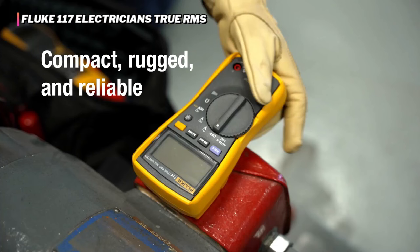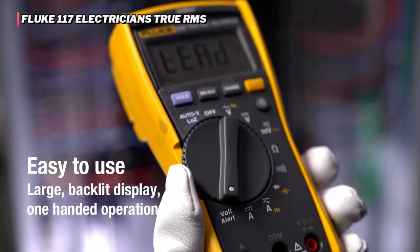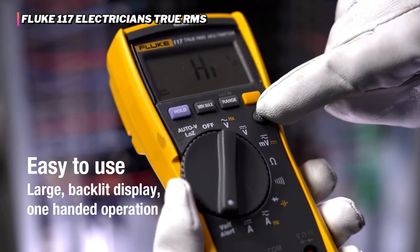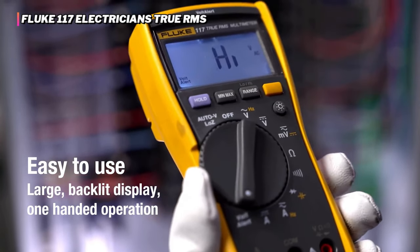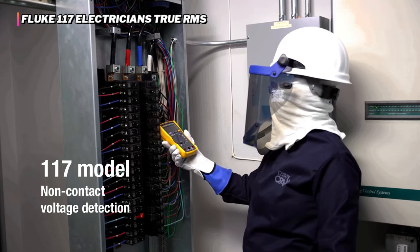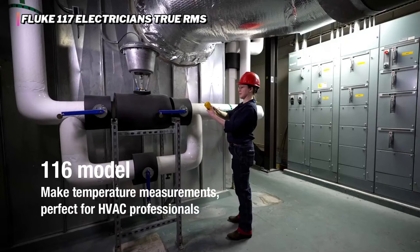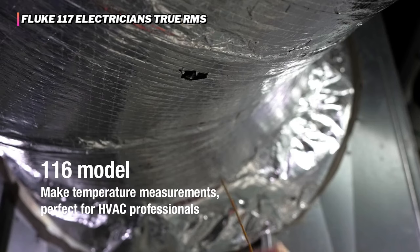This True RMS meter also has a low impedance input that can automatically detect the type of voltage being measured and choose the appropriate range. Additionally, you can purchase a current probe separately if you need to measure anything above 10 amps. The Fluke 117 offers a wide range of technical measurement functions.